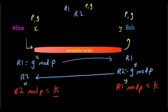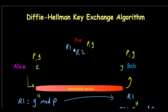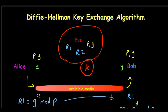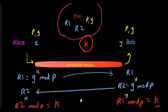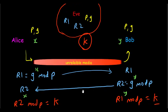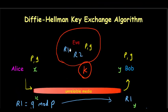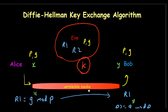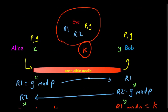Both Alice and Bob arrive at the same secret key K through this calculation. One beauty of the Diffie-Hellman algorithm is that although Eve knows R1, R2, P, and G, it is almost impossible for her to compute K. Even after knowing R1, R2, P, and G, you cannot calculate K.